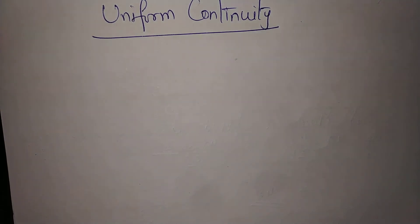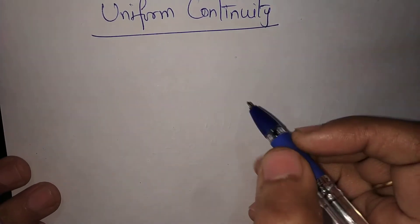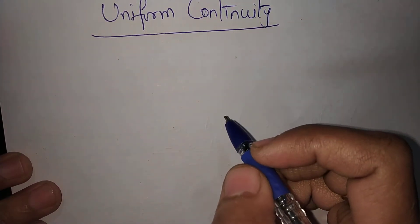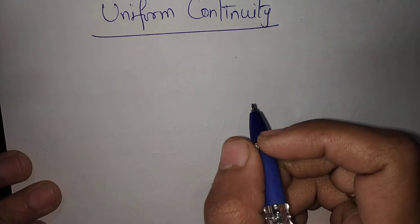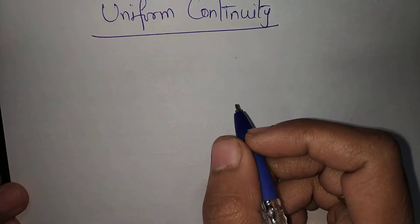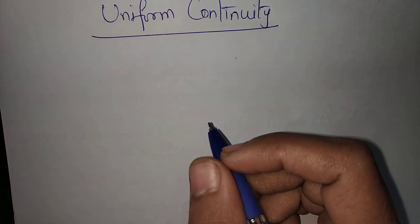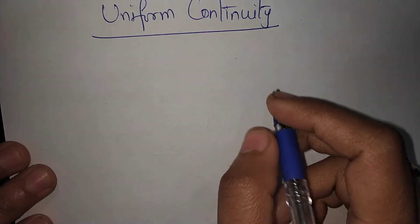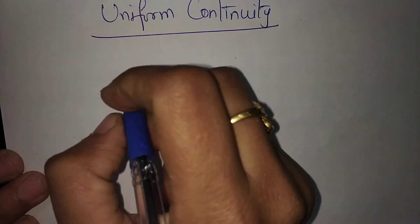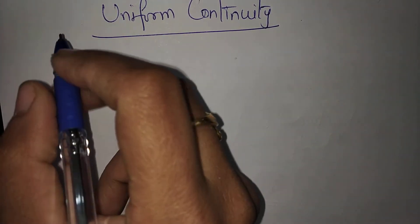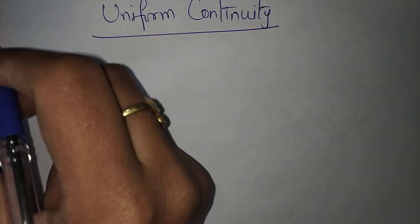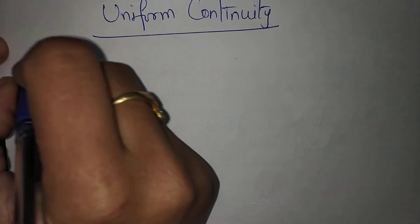Dear students, we have started the chapter of Continuity and Uniform Continuity in a metric space. The continuity theorems, examples and results have been covered. Now we will do Uniform Continuity. So let us start with the definition of a Uniformly Continuous Function.